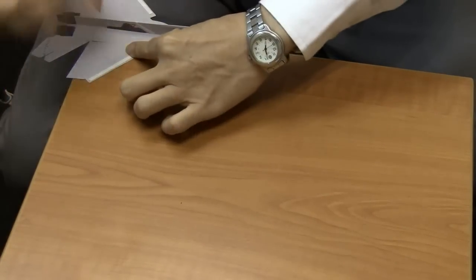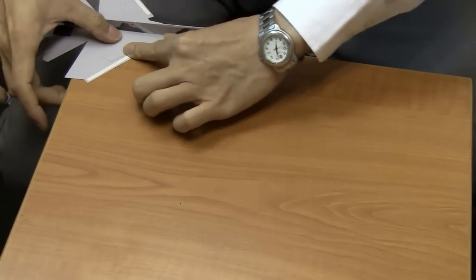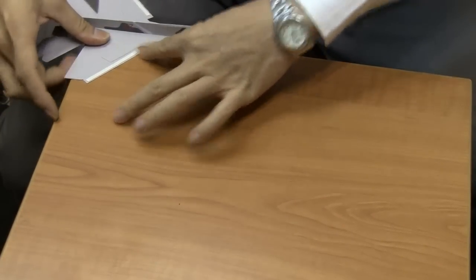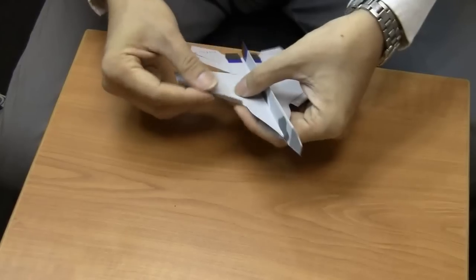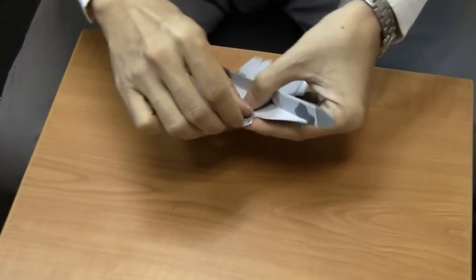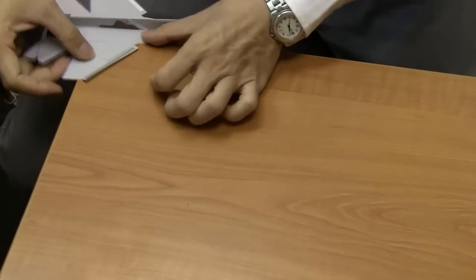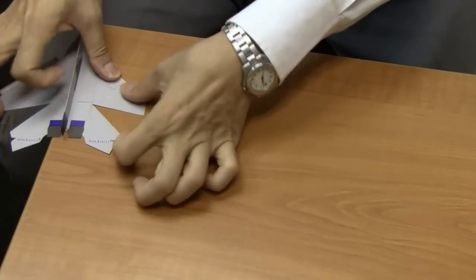For best results, use a flat tabletop that has got a perpendicular corner and prepare the wing portion. Use a tabletop again as a guide and press.